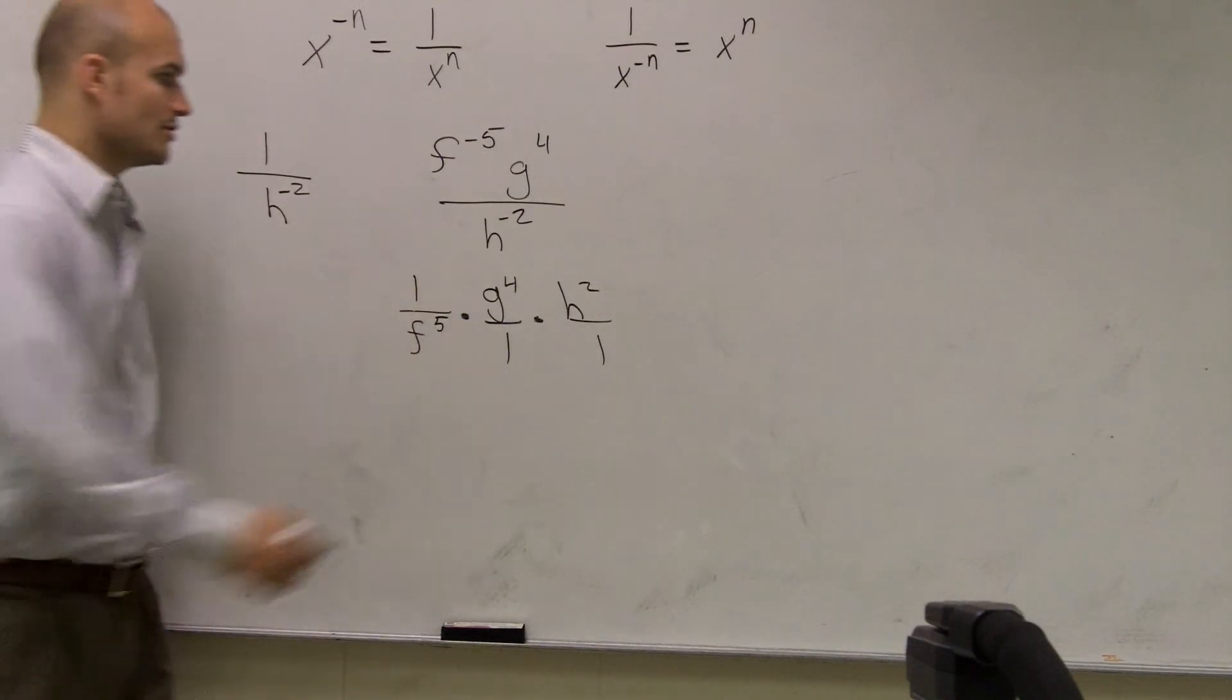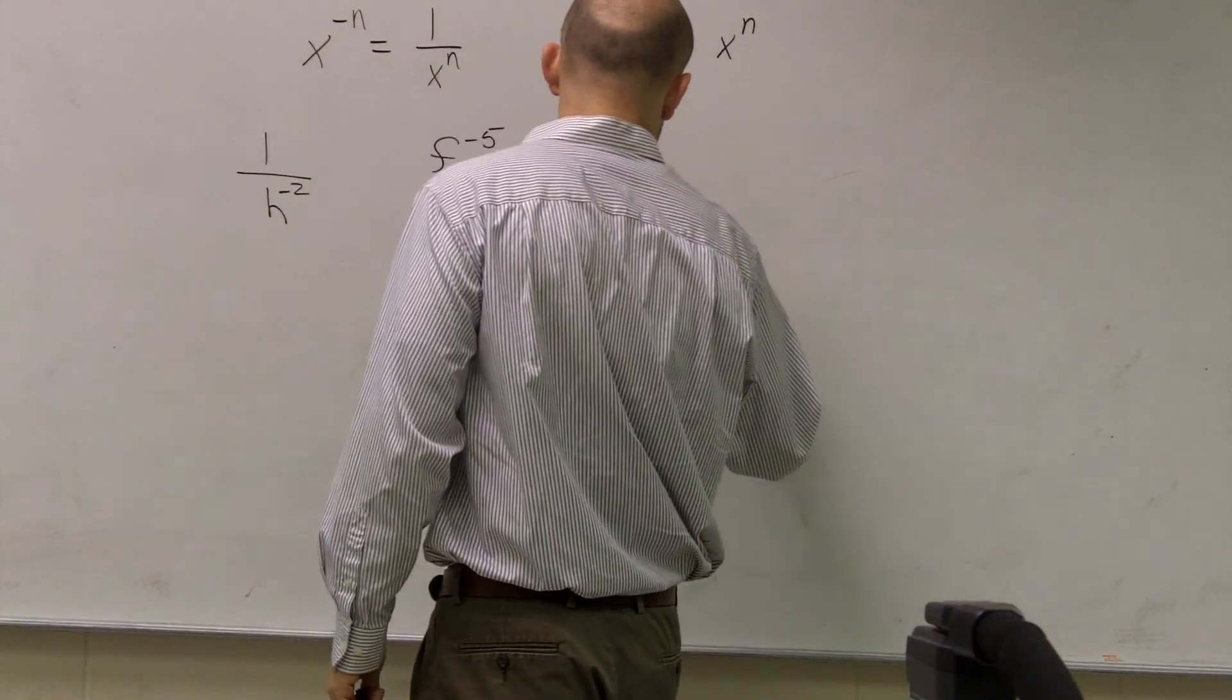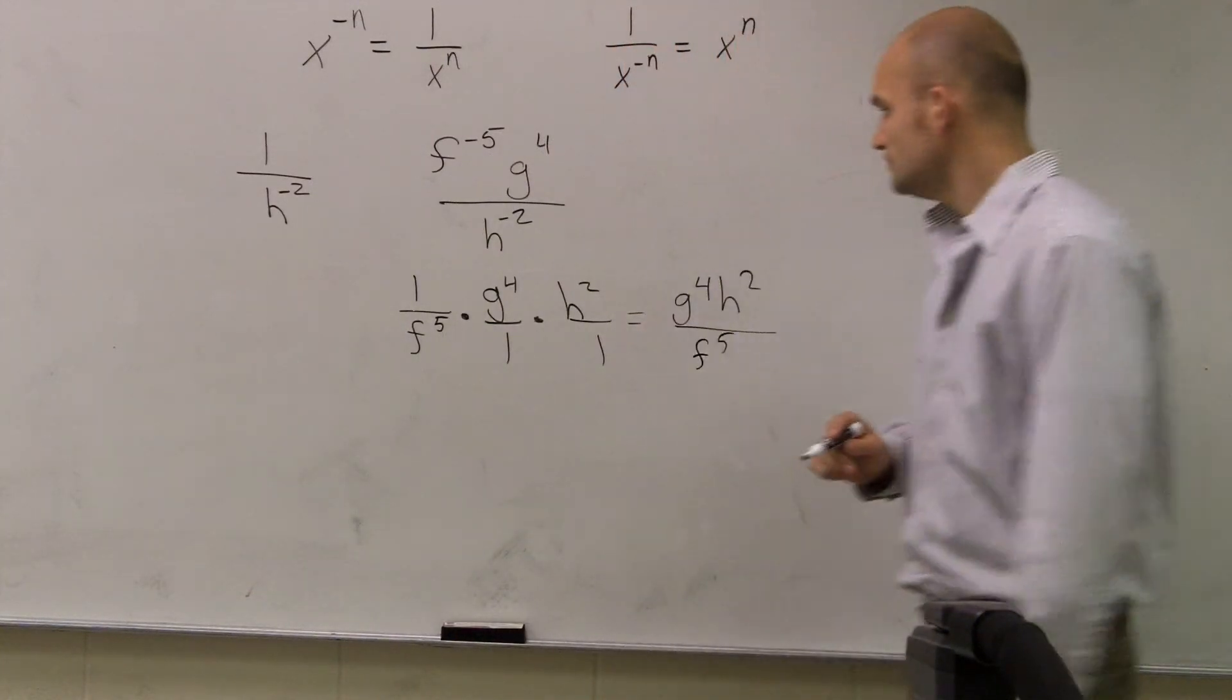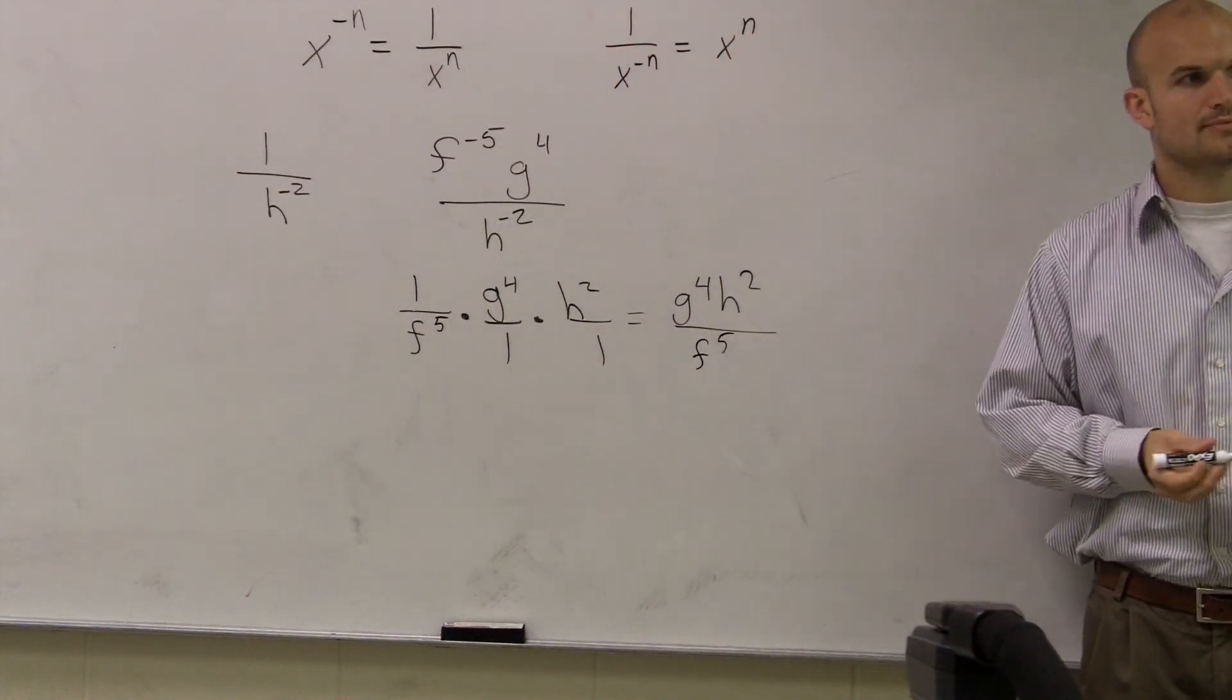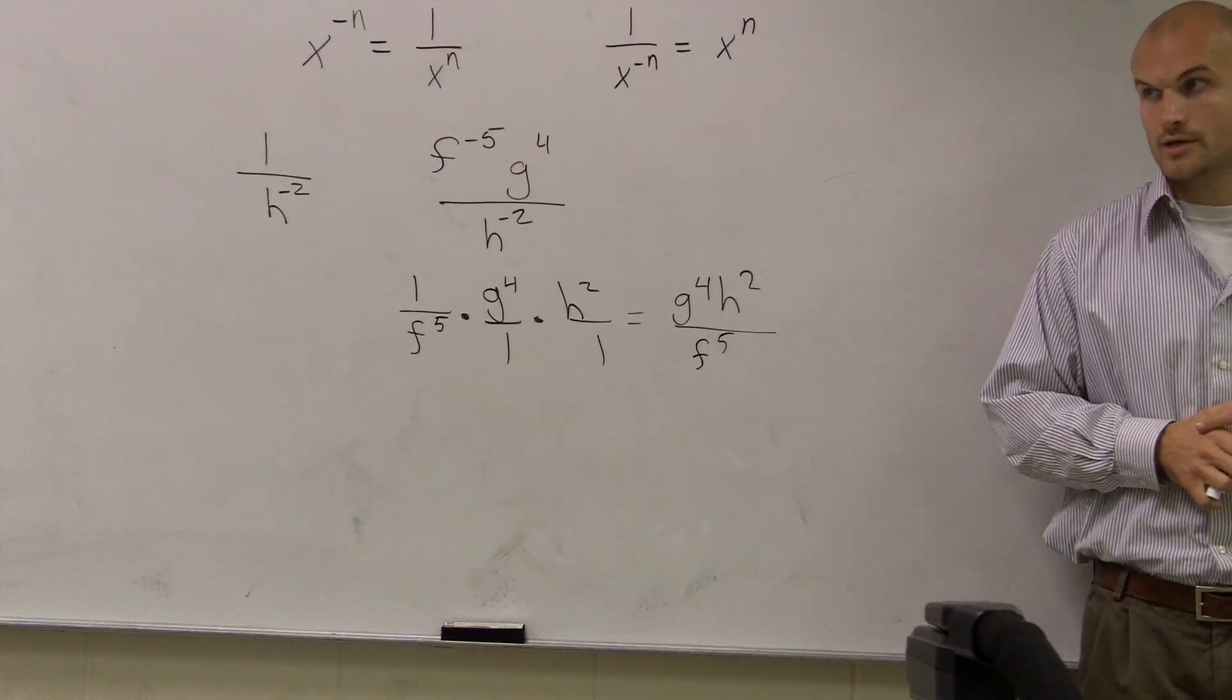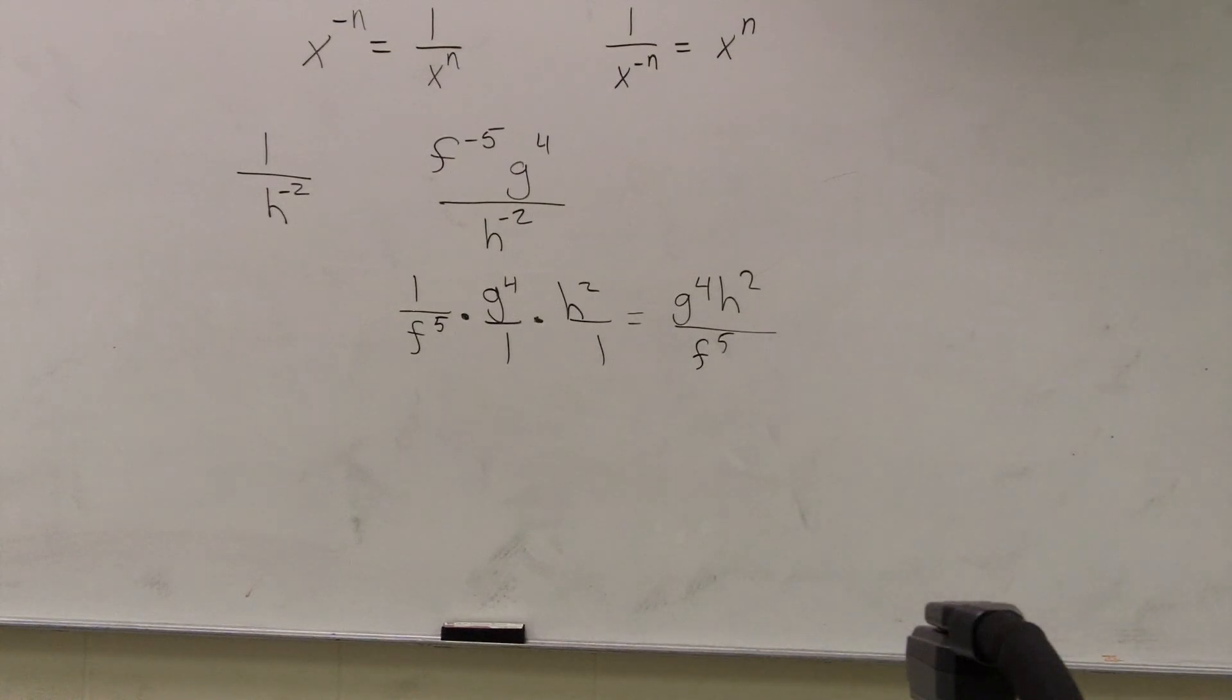Now I multiply through, and my final answer is g to the 4th, h squared, over f to the 5th. So that's it, simplified. You got it? Good?